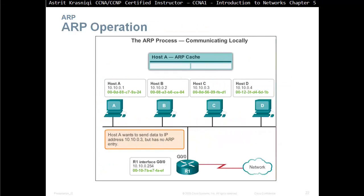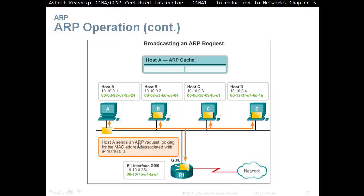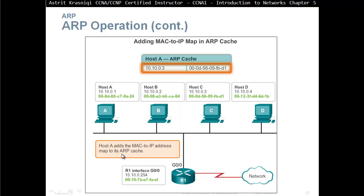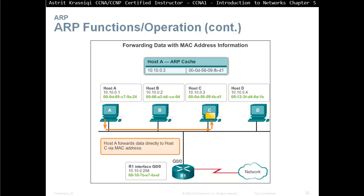ARP operation: Host A wants to send data to IP address 10.10.0.3 but has no ARP entry. As you can see, Host A wants to send data to Host C but nothing is in the ARP cache. So Host A sends a broadcast asking for the MAC address of 10.10.0.3. The broadcast reaches every device up to the router — routers drop broadcasts and will not forward them to another part of the network. Host C, with IP address 10.10.0.3, responds with an ARP reply including its MAC address, and Host A updates its ARP cache. Then Host A can communicate directly with Host C using Host C's MAC address.